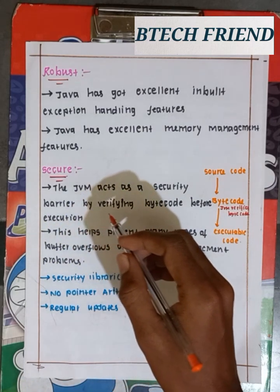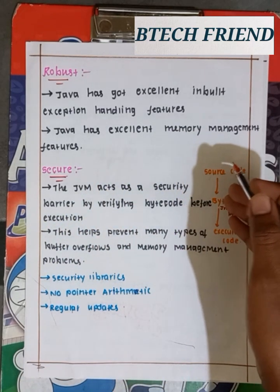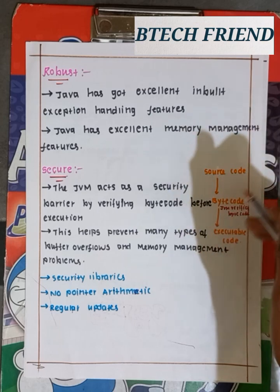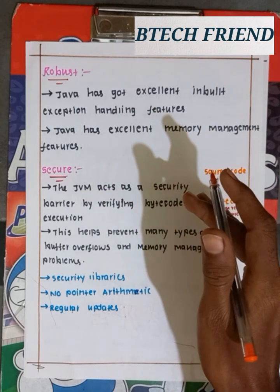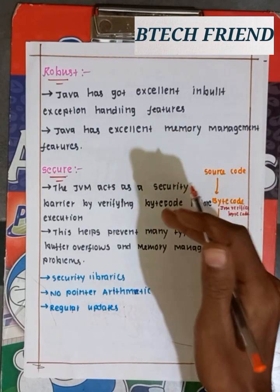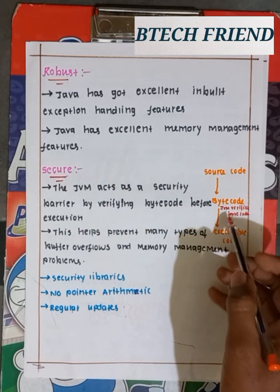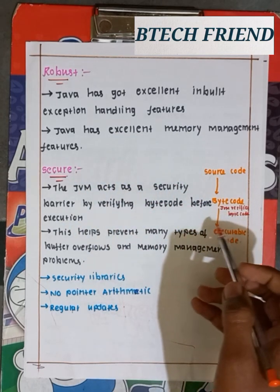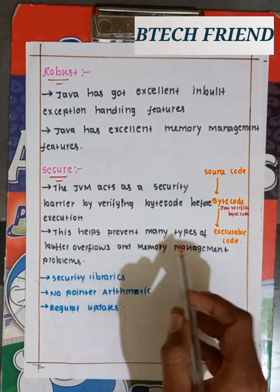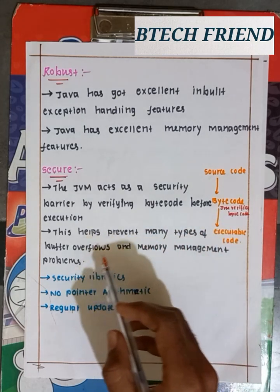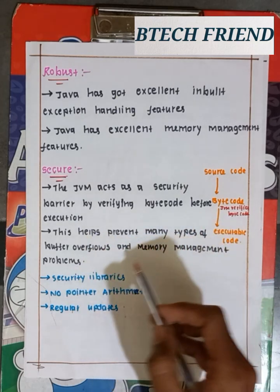The JVM acts as a security barrier by verifying bytecode before execution. We compile the code, convert it into bytecode, and then the Java Virtual Machine verifies it. This helps prevent many types of buffer overflows and memory management problems.